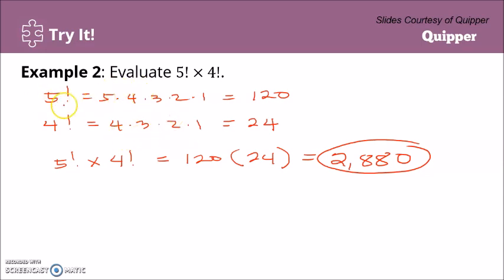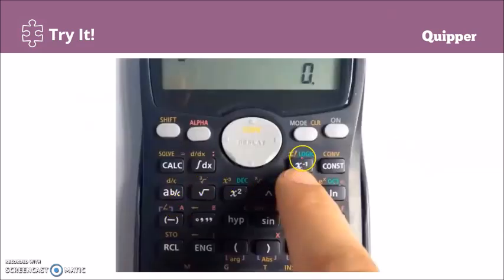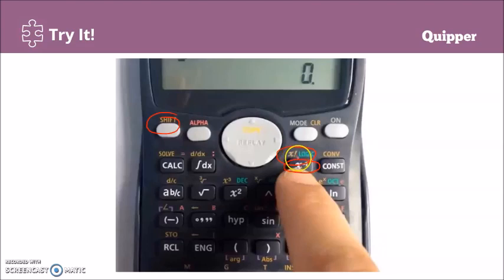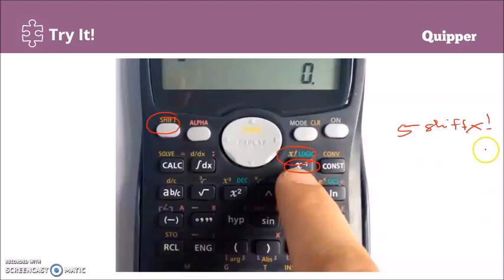We can actually solve this faster using a calculator. To compute 5!, type 5 and then look for the x! symbol — since it's a second function, press Shift first and then the x! key. That's how you compute factorials on your calculator.